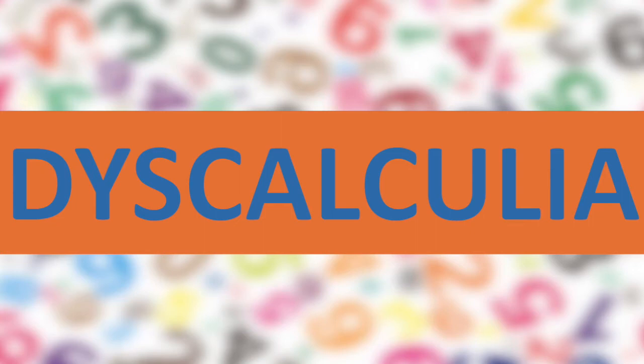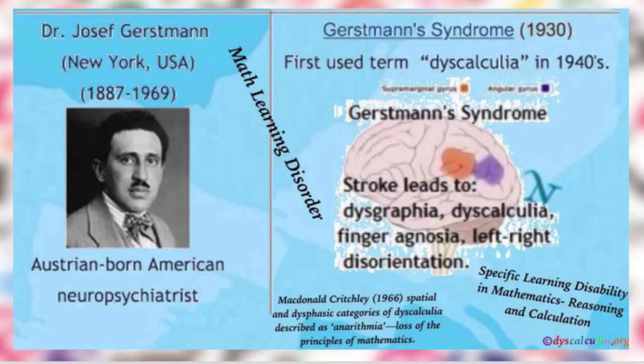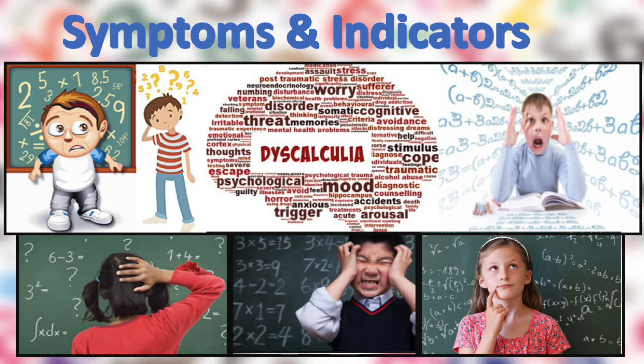Dyscalculia is a specific type of neurological learning disorder where a person has difficulty with numbers and comprehending the basic concepts of math. Since every individual is different, the indicators may vary. They're also affected by age group, but they become more obvious as the child gets older.